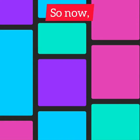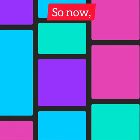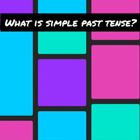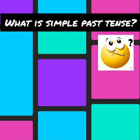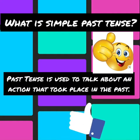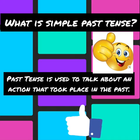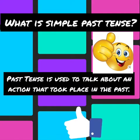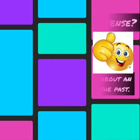So now, what is simple past tense? Past tense is used to talk about an action that took place in the past.